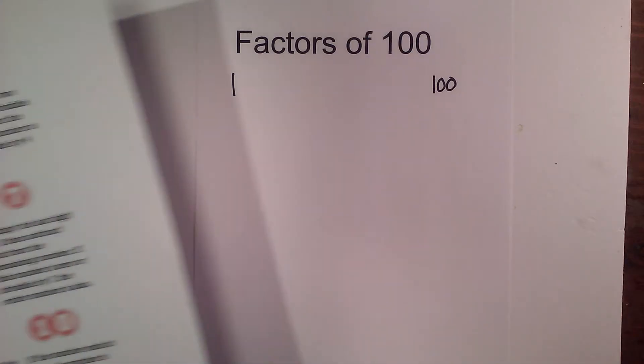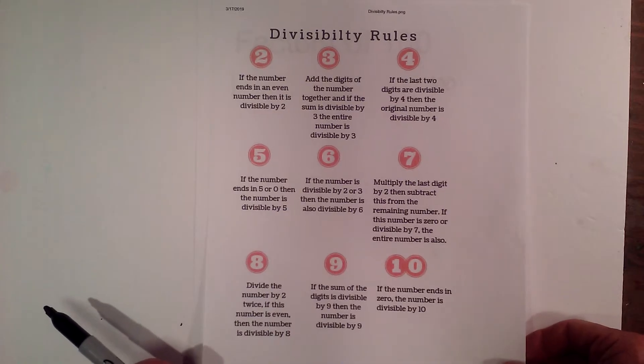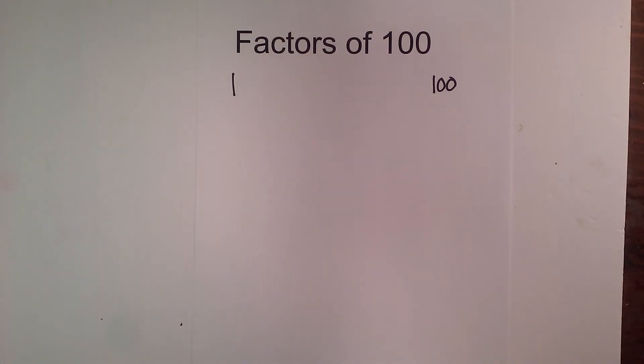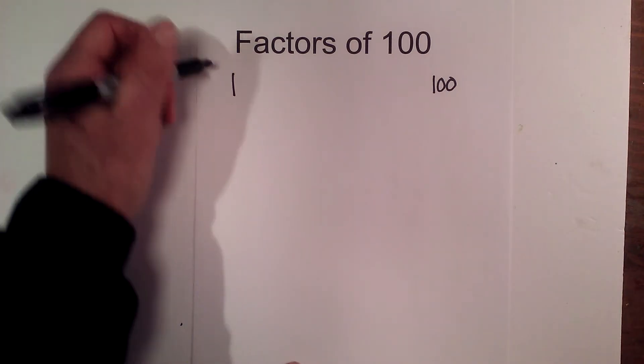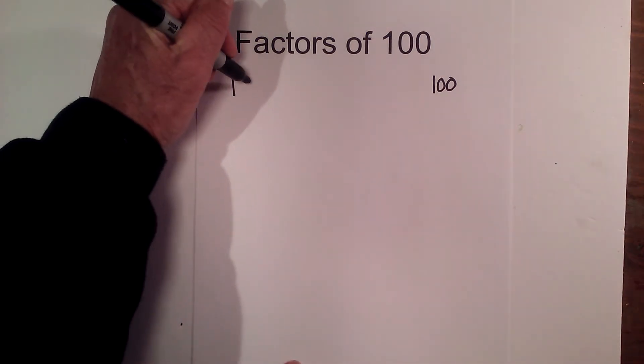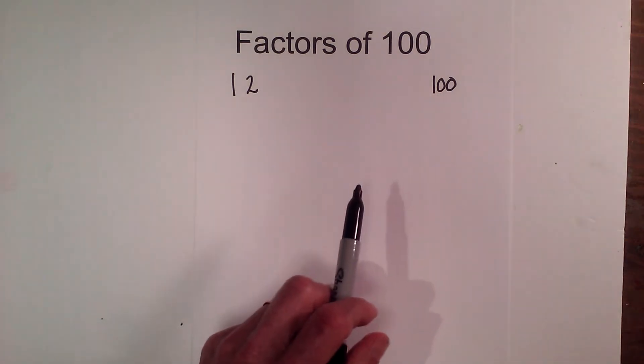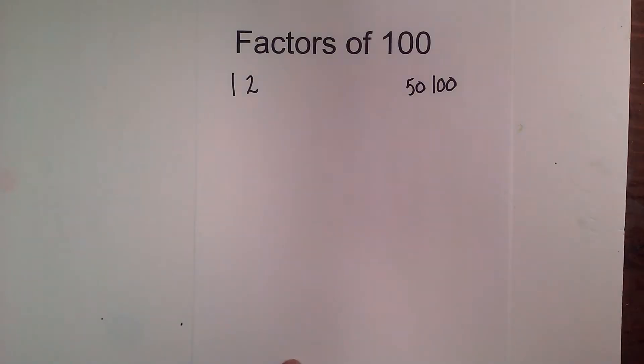I'm also using this divisibility rules chart because it helps me know if the number is divisible, and I'll leave a link—it's a free download if you think that would help. So let's begin with the number 2. I know 2 goes into 100 because it ends in an even number or a zero, and so 2 times 50 equals 100.